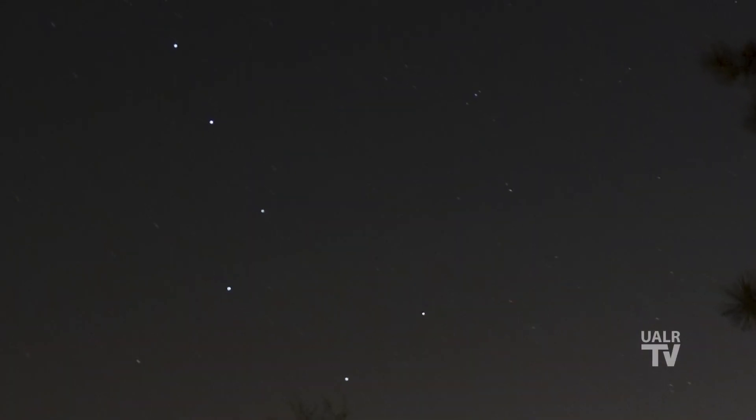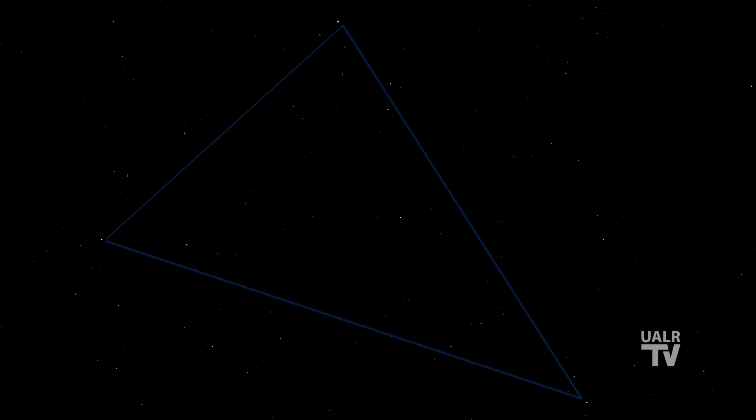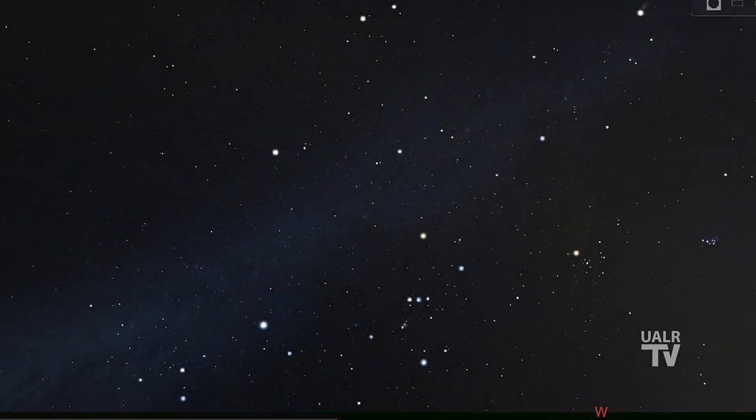Before even trying to learn the constellations, I suggest that you get to know the brightest stars as well as a few of the bright star patterns or asterisms they form. Things like the Big Dipper, the Summer Triangle, and the Winter Hexagon. Once you master these, the constellations will fall into place all the easier for you.